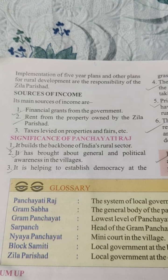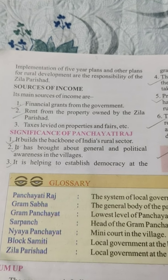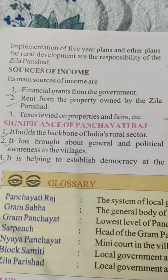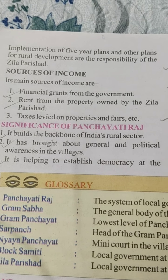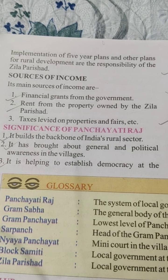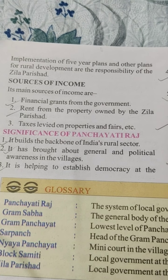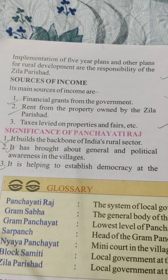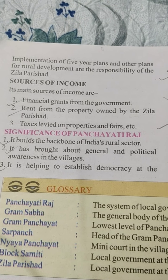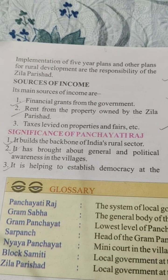Sources of income of Jilla Parishad: Its main sources of income are: 1. Financial grants from the government. 2. Rent from the property owned by the Jilla Parishad. 3. Taxes levied on properties, fairs, etc.